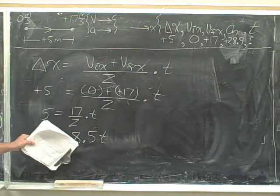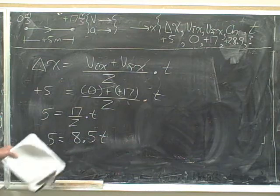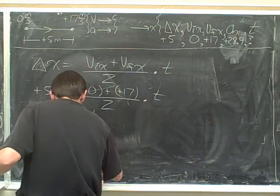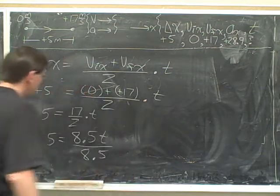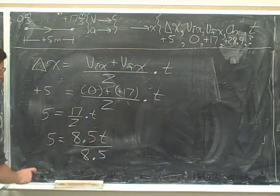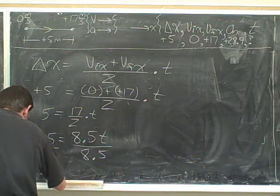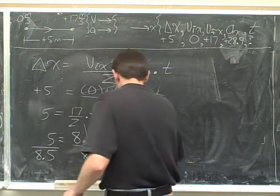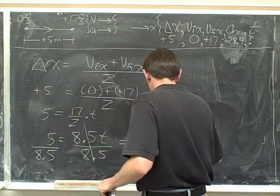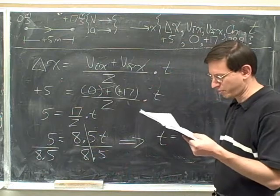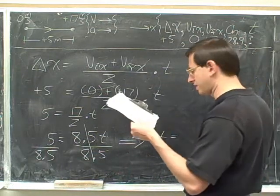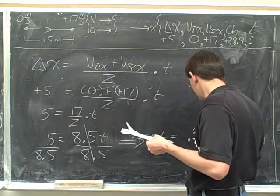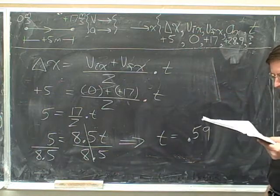Now we need to move this 8.5 away from the t. If the 8.5 is multiplying the t, we use the 'do the opposite' principle and divide. The golden rule of algebra says that if we're going to divide the right-hand side by 8.5, we are morally obligated to divide the left-hand side by 8.5. Now the 8.5 is canceling, and we get that the time is 5 divided by 8.5. Fish out your calculator and determine that the time is approximately 0.59.